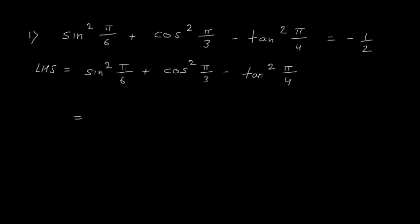You should know the relation between degree and radian. Pi radian is equal to 180 degrees. So if you substitute pi as 180, you will get 180 upon 6 as 30. So this is sin 30 and you know the value of sin 30.